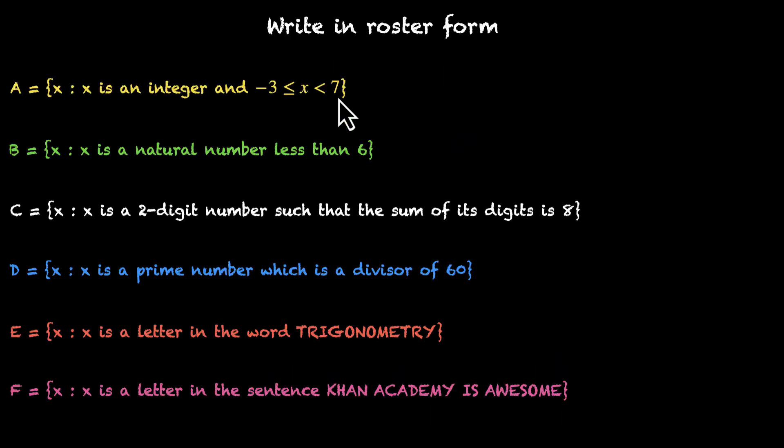So we have these 6 questions and we want the answers for them. Let's tackle them one by one. Let's look at the first one. A is the set of all x such that x is an integer and x is between minus 3 and 7, minus 3 included, 7 not included. This is -3 ≤ x < 7. So x can be minus 3 but x cannot be 7. Okay. So what's the answer?